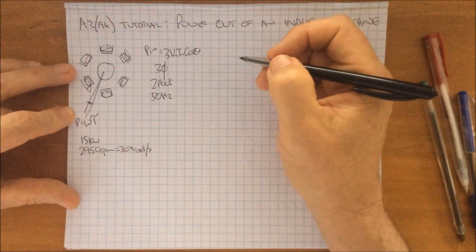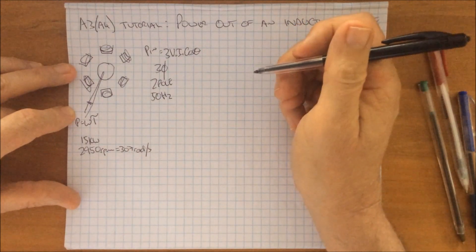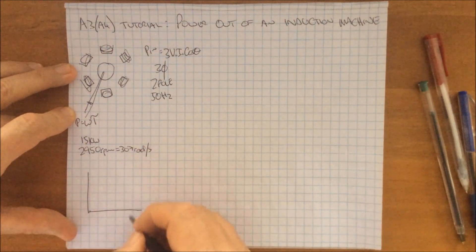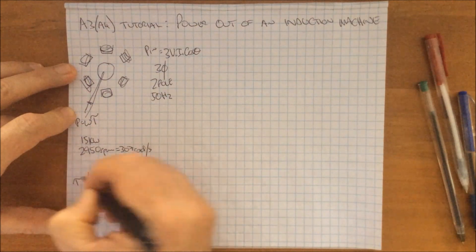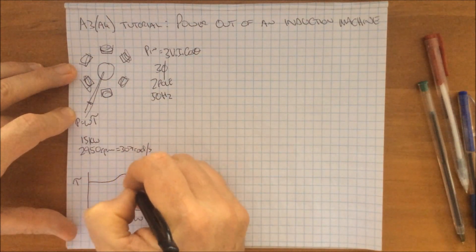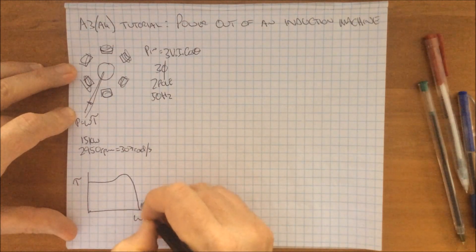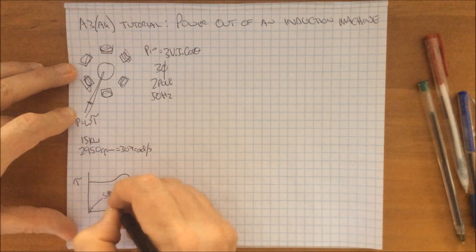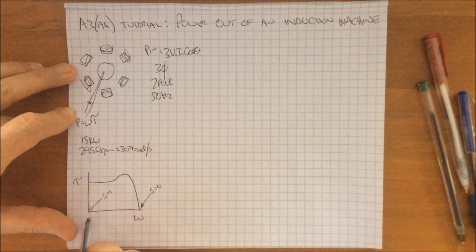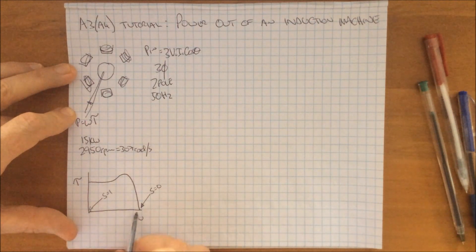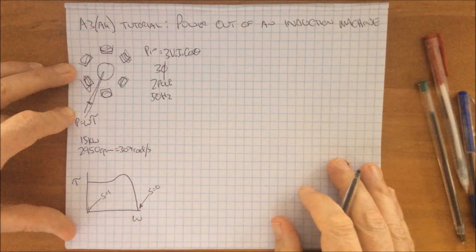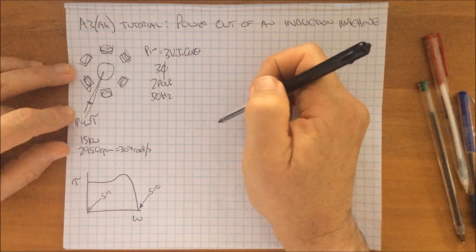What can we know about this machine in terms of power and how power is going to change? Remember we've got the curve between the speed of the machine and the torque for an induction machine, and it looks a little bit like this. At this point here is when slip equals zero; at this point here is when slip equals one — in other words the rotor is not turning. Then we come up through here through this peak torque point and then come down here.